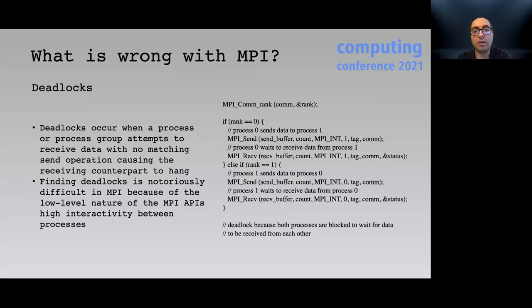Finally, deadlocks might occur when a process or process group attempts to receive data with no matching sent operation causing the receiving counterpart to hang. Finding deadlocks is notoriously difficult in MPI because of the low-level nature of the MPI APIs and high interactivity between processes during the execution of the program.